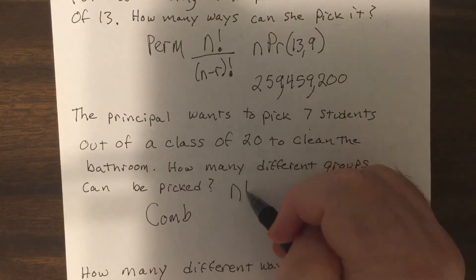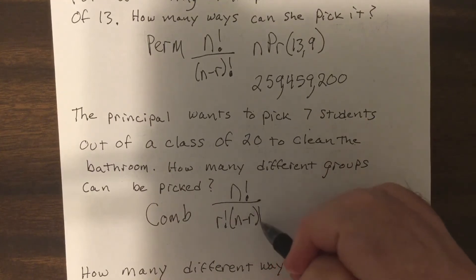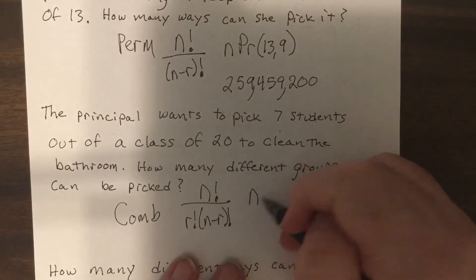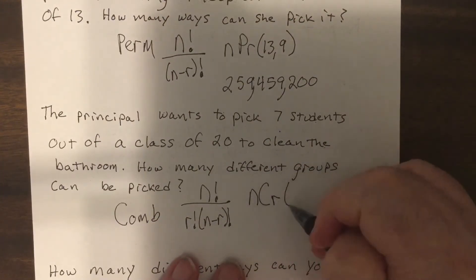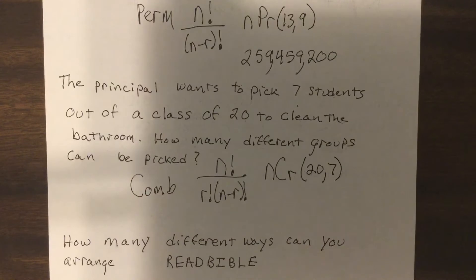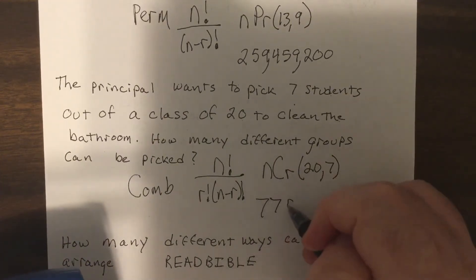A combination is n factorial over r factorial times (n minus r) factorial. You can also just use nCr on Desmos. With n=20 and r=7, the answer is 77,520 different groups.